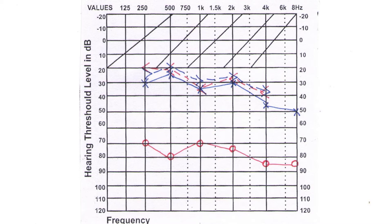In the above audiogram, air conduction masking should be carried out at the following frequencies. At 250 Hz, as the gap between the left ear BC and the right ear AC thresholds is 45 dB. At 500 Hz, the gap between the left ear BC and right ear AC thresholds is 55 dB.